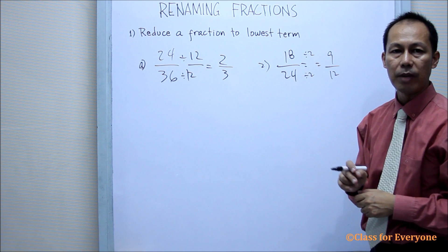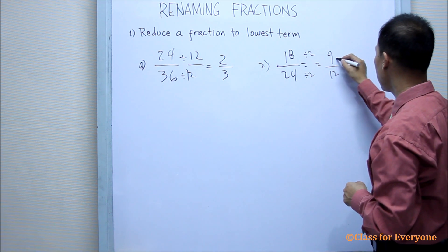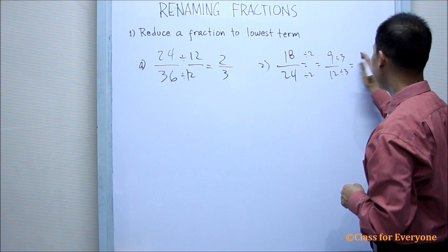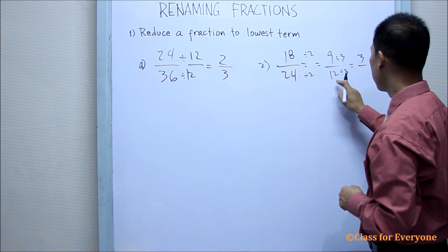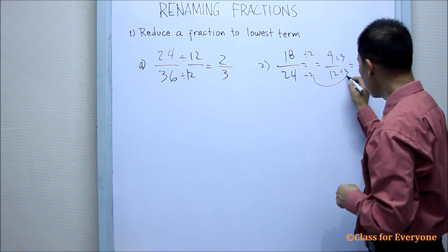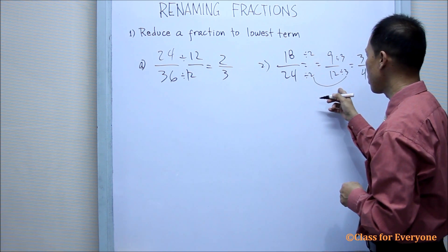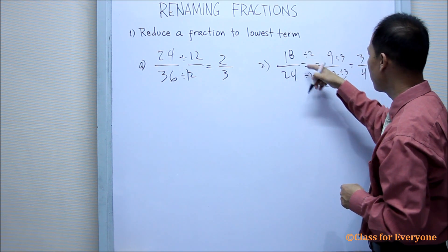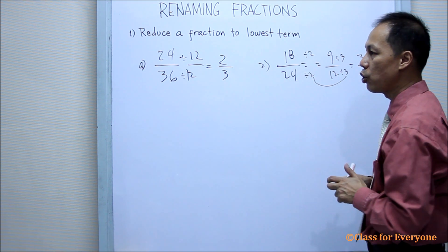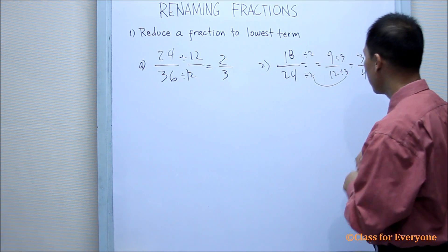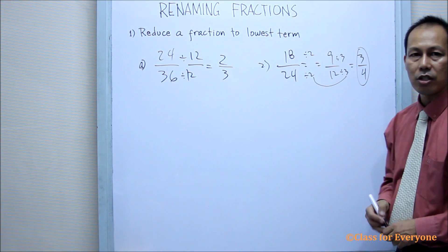9 and 12 are both divisible by a number which is 3. So we'll divide it again by 3. 9 divided by 3 is 3, and 12 divided by 3 is 4. Therefore, we can say that the greatest common factor is 6. We can do it in short by just dividing by 6. But since there are times that you do not know yet the greatest common factor, divide by the easiest one. So the answer is 3 over 4.